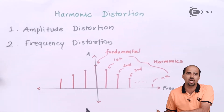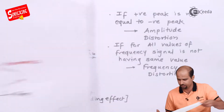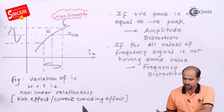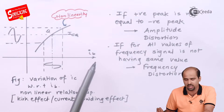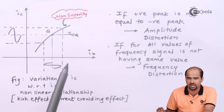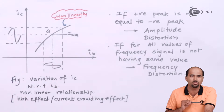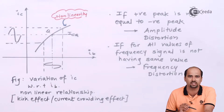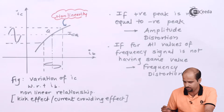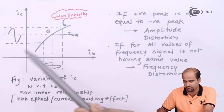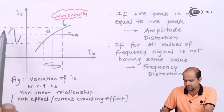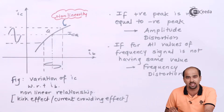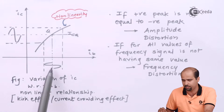We will first understand mathematically how distortion occurs. When talking about the relationship between IC and IB — where IC is the collector current and IB is the base current — in a voltage amplifier we form a linear relationship, but in a power amplifier we have to consider the non-linear relationship. This non-linearity shows that for the same change in IC, there is a different change in IB.